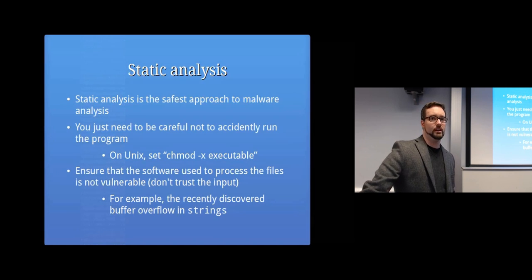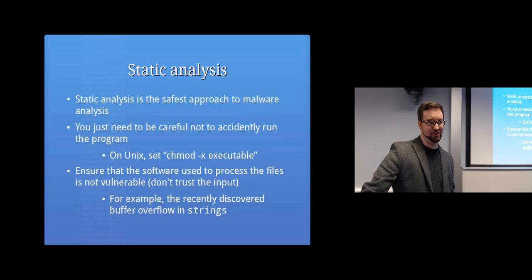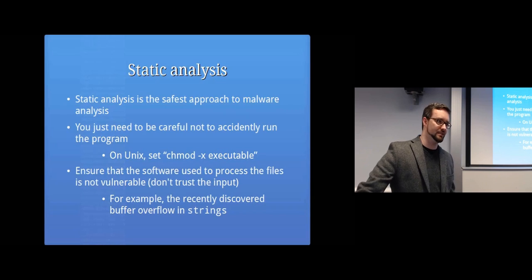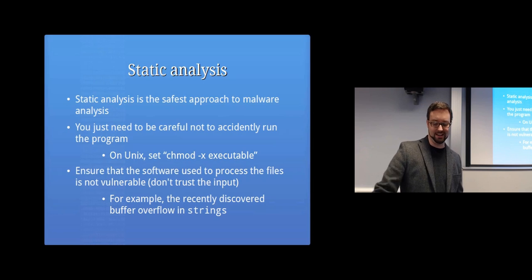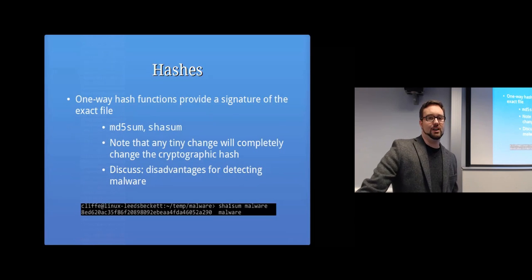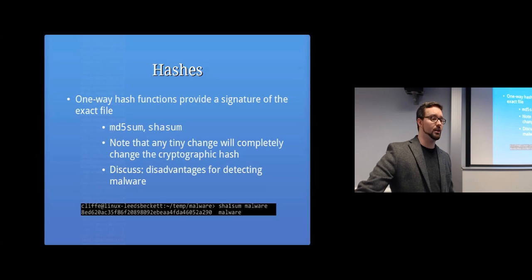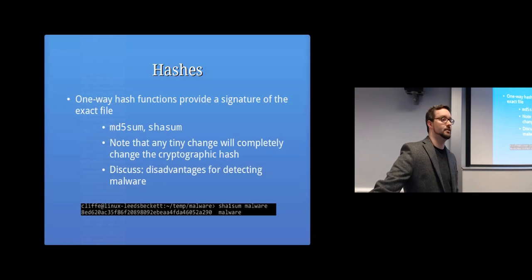So it's probably a good idea to be working in a virtual machine even if you're doing static analysis, or at least have a computer that you are willing to sacrifice and re-image when needed. You guys all know about one-way hash functions by now — basically it gives you a signature of an exact file. We did that in the integrity management topic within this module. Commands like md5sum and shasum use the MD5 or SHA one-way hash function to create a signature of that file, and if a single bit changes, the signature changes completely.